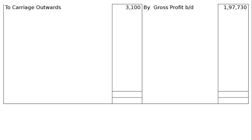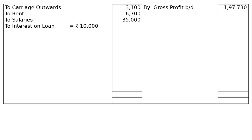On the debit side of the profit and loss account, we have: carriage outwards Rs. 3,100; to rent Rs. 6,700; to salaries Rs. 35,000; to interest on loan. Rs. 10,000 is already given in the trial balance, but our loan amount is Rs. 2,00,000. It was taken on 1st April 2015, exactly one year ago, and the rate of interest is 10%. Hence the total interest is Rs. 20,000. We have paid Rs. 10,000 as per the trial balance. Hence, outstanding interest on loan is another Rs. 10,000.